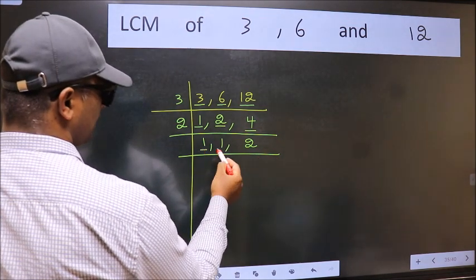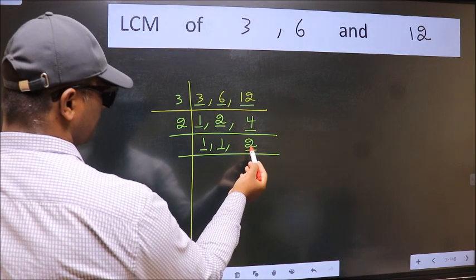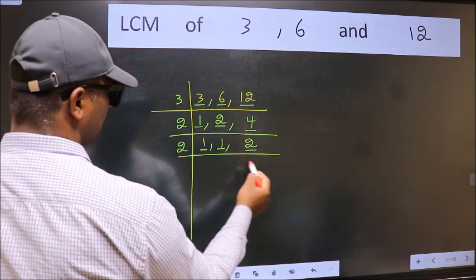Now we got 1 here and here. So focus on the next number 2. 2 is a prime number so 2, 1 is 2.